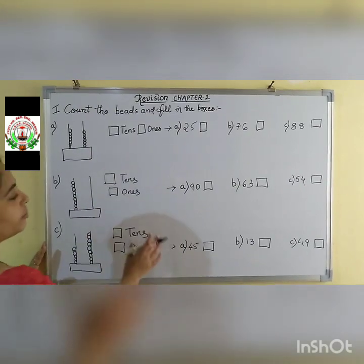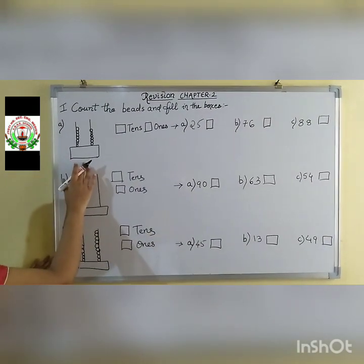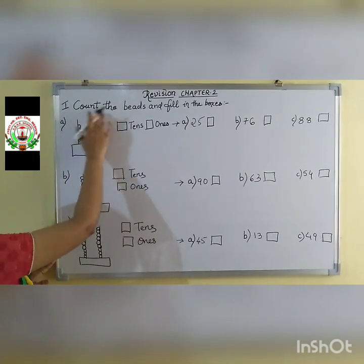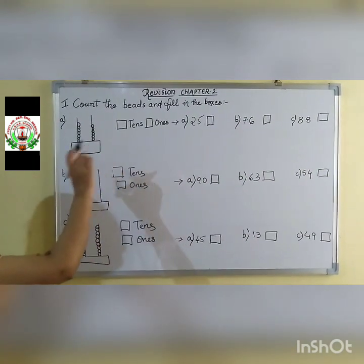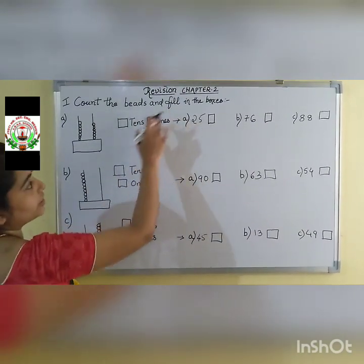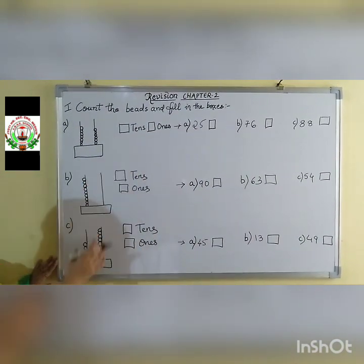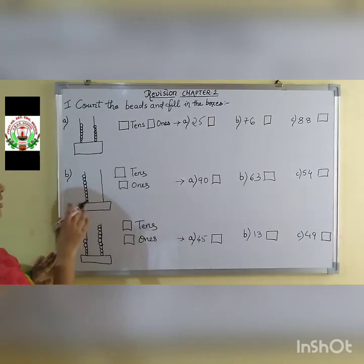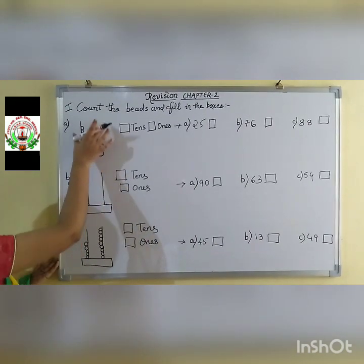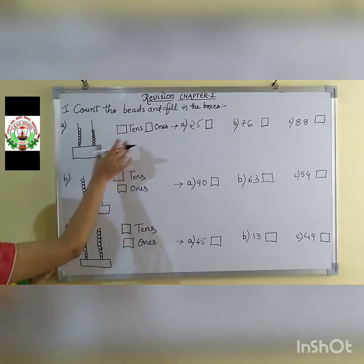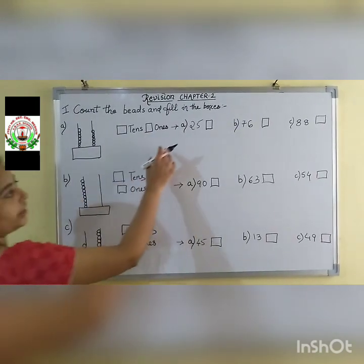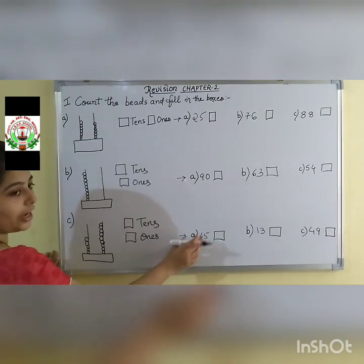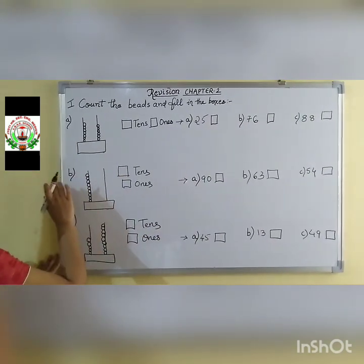So children, here some questions are given. These are revision questions of Abacus. Do you know how to do Abacus? Question 1 — revision questions from your chapter number 2: count the bits and fill in the boxes. Here in the form of Abacus you know the place value — 1s and 10s for a 2-digit number. You have to fill in the 10s and 1s place. 3 options are given for every question; you have to see and tick mark the correct one.